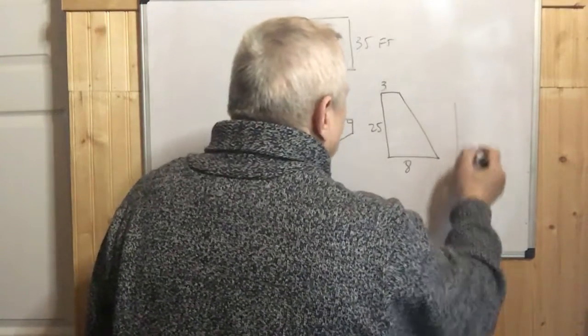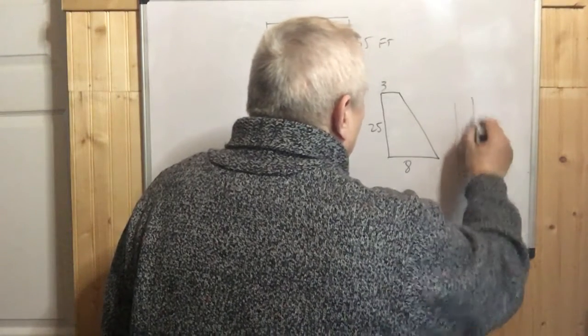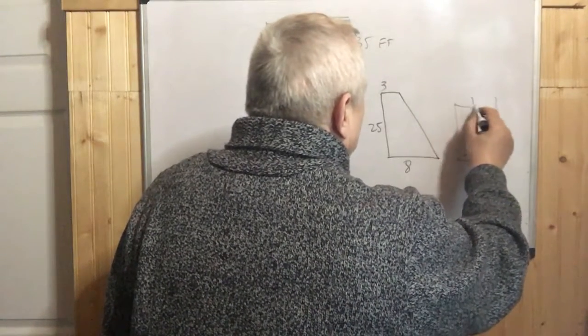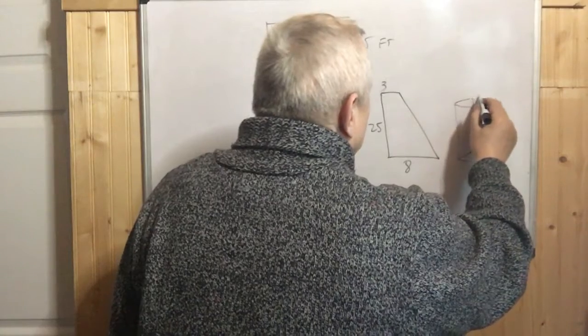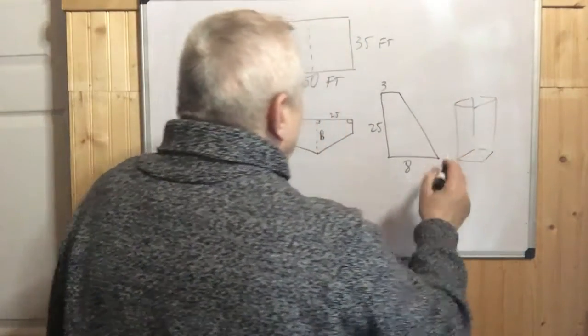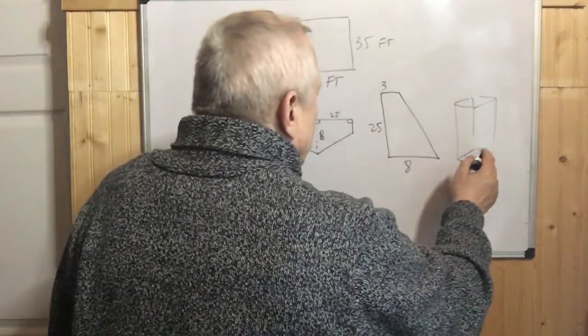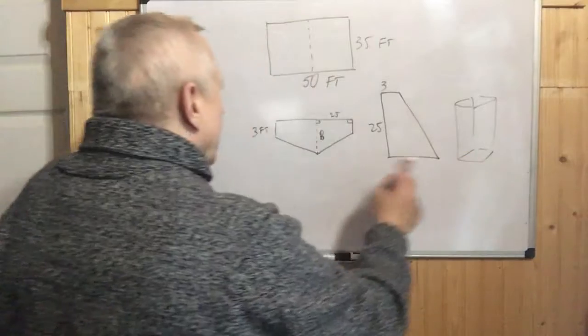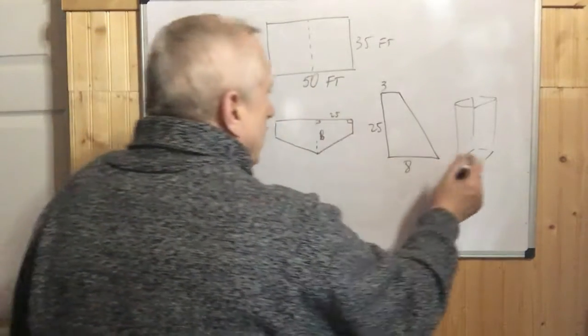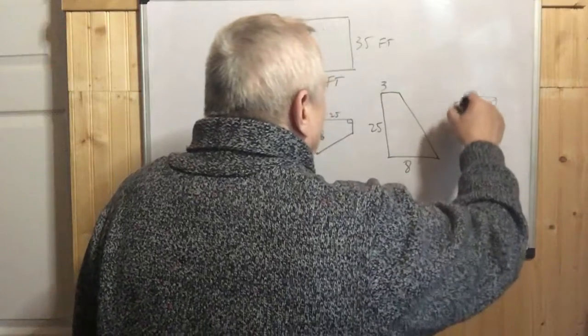That will be something like this. It's not going to be rectangular. What we need is actually the surface of this side on the bottom, if we turn it upside down like that, and multiply it with the height.